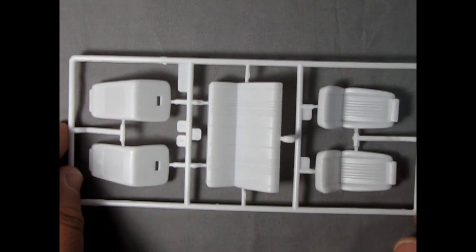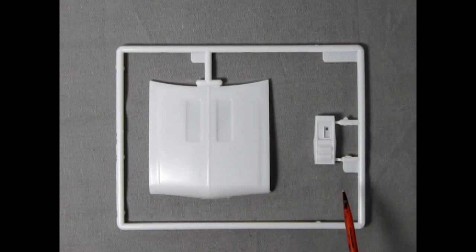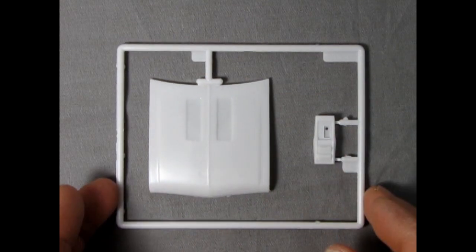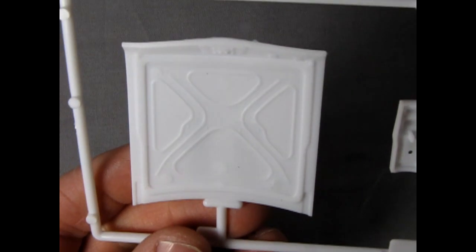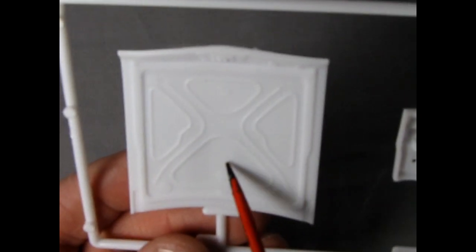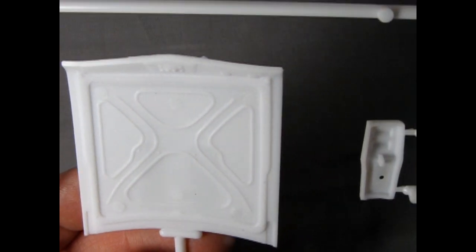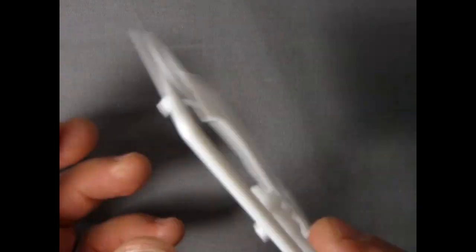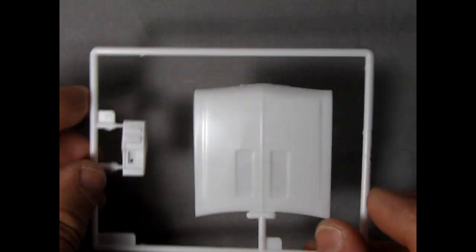Our next parts tree includes the stock hood and the center console. Bringing these up to the camera and turning it over, you can see the nice ribbing in here as well as the trunk mat underneath. There are some mold marks that we'll have to clean up. And then our center console here—again looks really nice, just like the real one in the Nova.